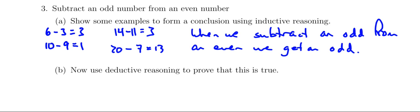Now what we're going to do is we're going to prove that that's actually true. So we're going to let n and m be natural numbers. And so that means 2n minus 1 is odd, and 2m is going to be even.